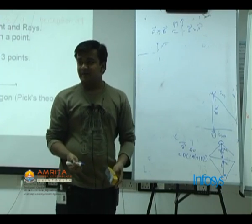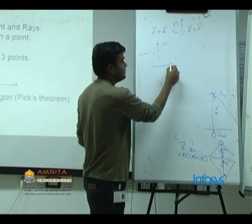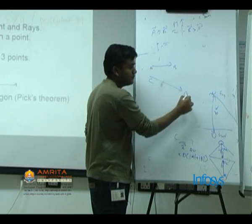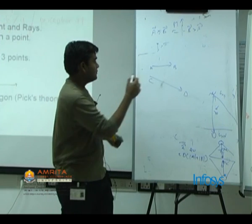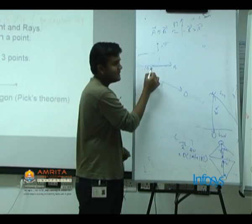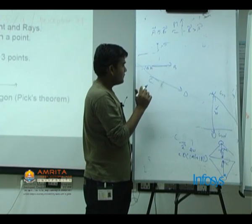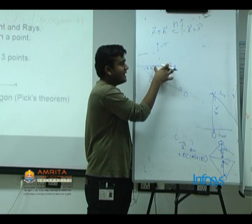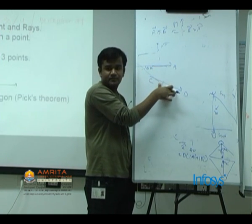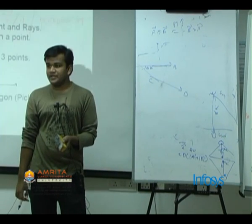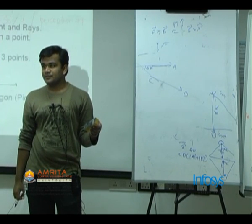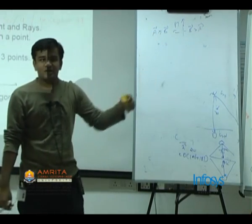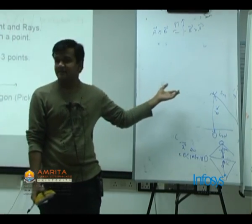Let's say we want to find the angle between a pair of lines. We have line L1 from A to B and line L2 from C to D. We want to find angle theta between these two lines. Even if you extend these vectors, the angle won't change. So we find the angle between the line vectors by taking the dot product or cross product and dividing by the magnitudes, giving cosine or sine of the angle. You can then take the inverse and get the angle. You can also test if two lines are parallel just by checking if this angle is 0.